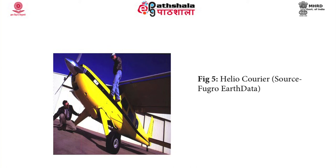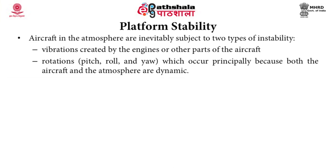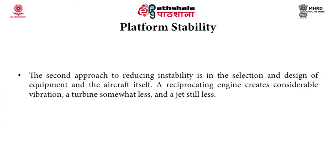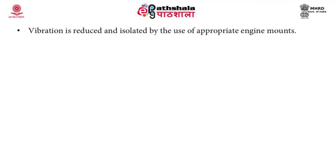The platform stability of aircraft is subject to two types of instability: vibrations created by the engines or other parts of the aircraft, and rotations (pitch, roll, and yaw) which occur principally because both the aircraft and the atmosphere are dynamic. There are two basic ways of reducing these instabilities: first, providing a mount which isolates the sensor from aircraft vibration and by gyros maintains the sensor attitude independent of aircraft rotations — mounts of this type have been designed by the US Air Force. Second is the selection and design of equipment and the aircraft itself; a reciprocating engine creates considerable vibration, a turbine somewhat less, and even lesser is a jet.